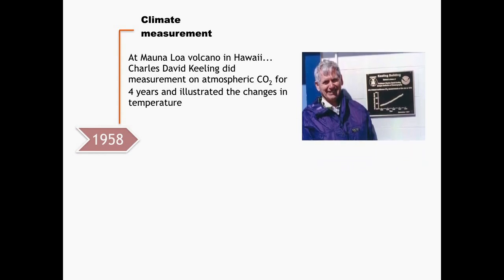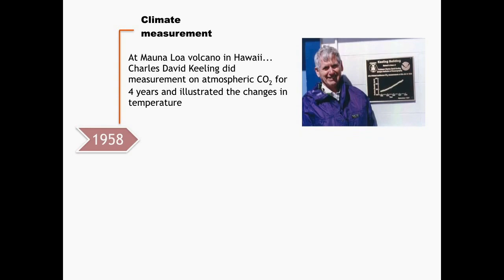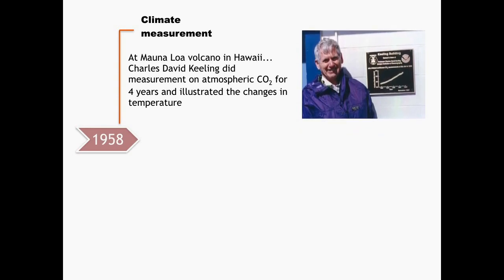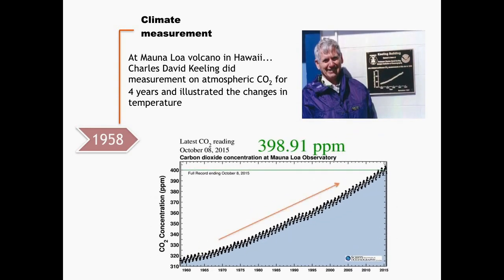As the first person to confirm the accumulation of atmospheric carbon dioxide, Charles David Keeling became a world leader in research on the carbon cycle and the increase of carbon dioxide in the atmosphere. By using precise measurements, he produced a data set now known widely as the Keeling curve.